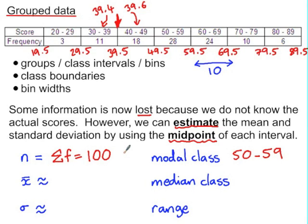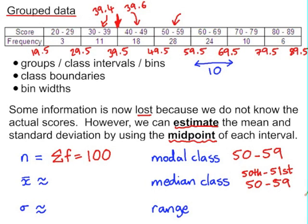With 100 scores, we know the median is going to be between the 50th and 51st score, both of which are also in the 50 to 59 category.